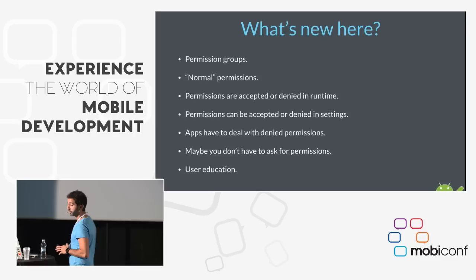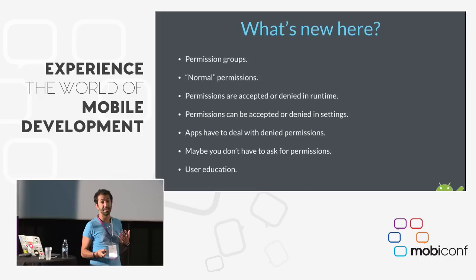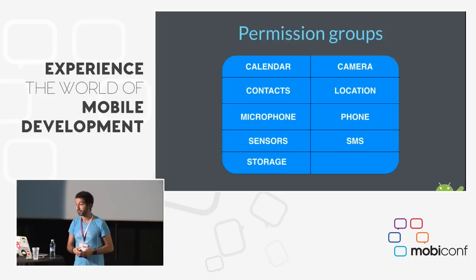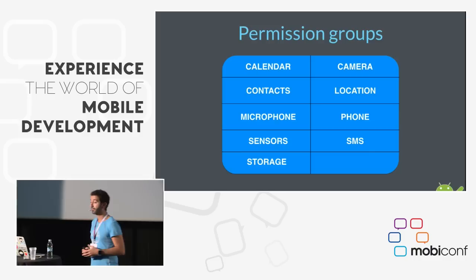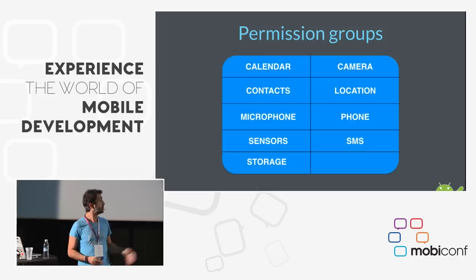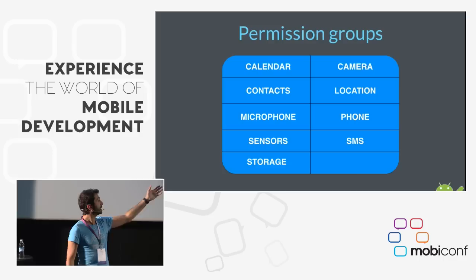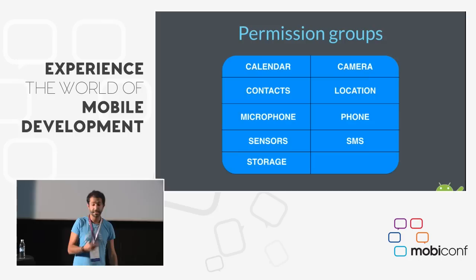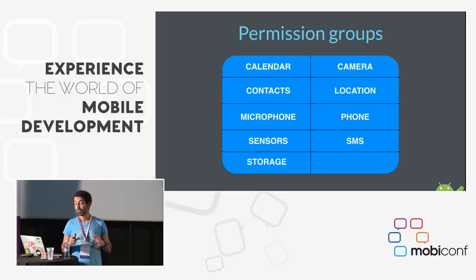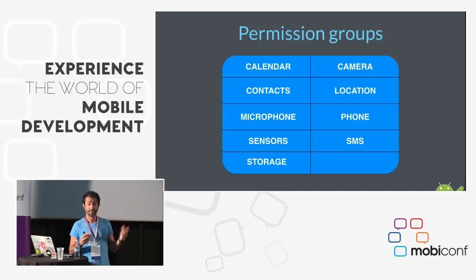What's new in the new Android permission model? We have several things: permission groups, normal permissions, and permissions that can be granted at runtime. In Android 6.0 Marshmallow we now have nine groups: calendar, camera, contacts, location, microphone, phone, sensors, SMS, and storage. Inside each group we have the real permissions — for instance, in SMS we have permissions for sending SMS and receiving SMS, and for storage we have writing and reading external storage.